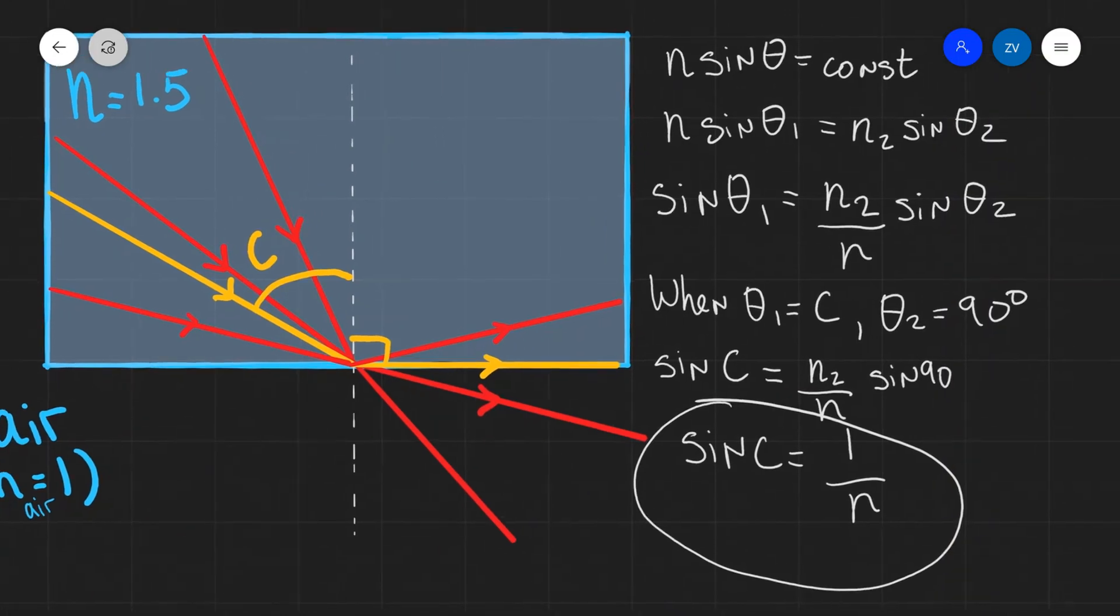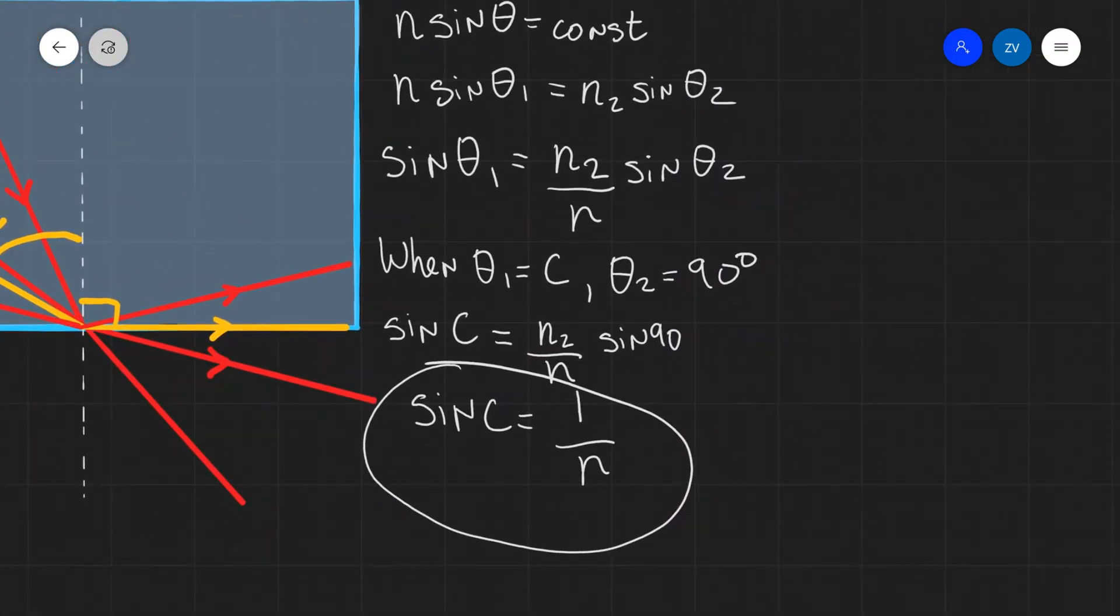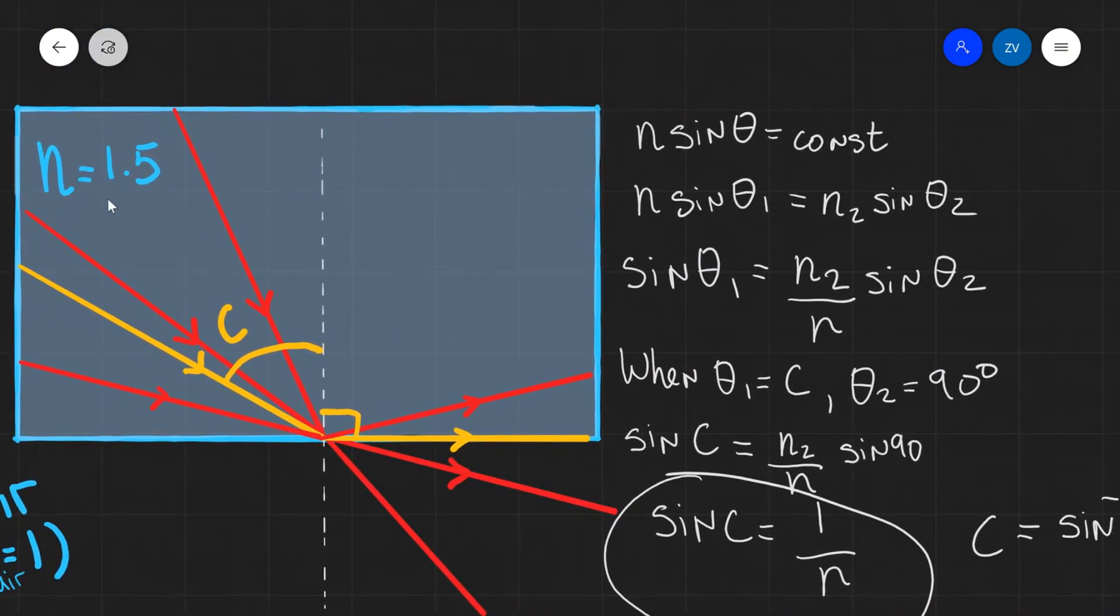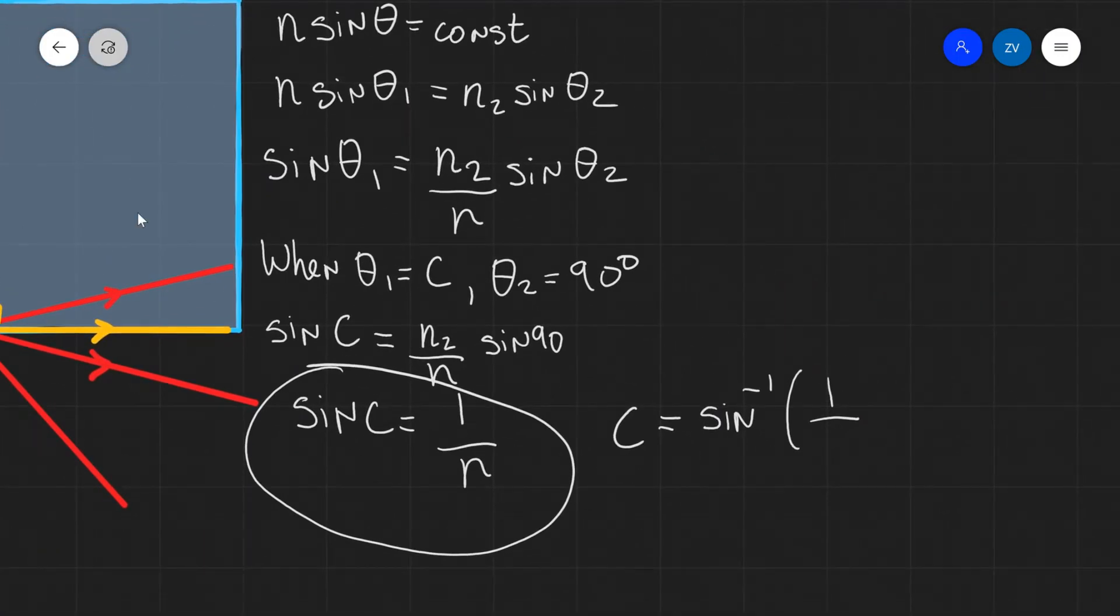Now let's actually substitute some numbers and calculate the value for the critical angle. So we know that sine of the critical angle is 1 over N. That means that the critical angle C will be equal to the inverse sine of 1 over N. Now remember N is the original refractive index which is 1.5. So we can substitute that into this equation. Inverse sine of 1 over 1.5. Let's make sure that our calculator is in degree mode, not in radiance mode. And we are going to get approximately 42 degrees up to two significant figures.